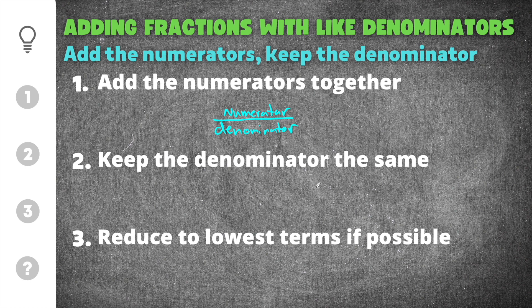The second step is you keep the denominator the same. So we're going to add the numerators together, keep the denominator the same, and then reduce if it is possible. Now it's not always possible to reduce but sometimes you can reduce to the lowest terms.